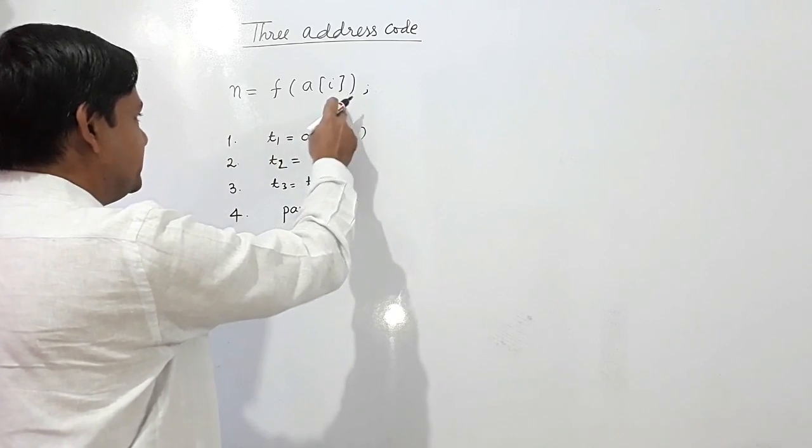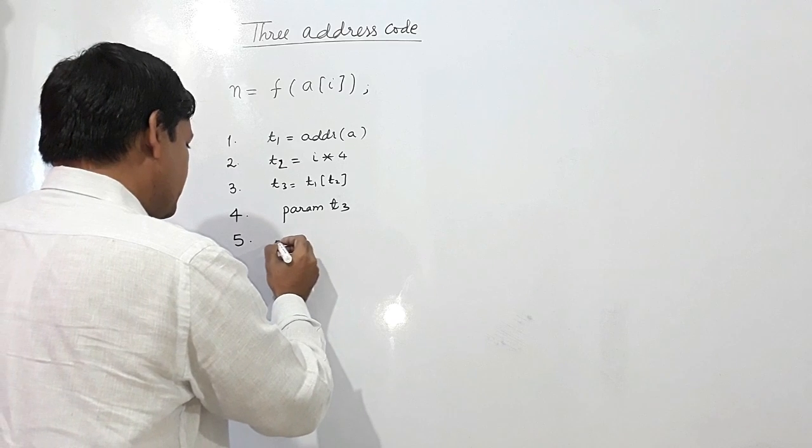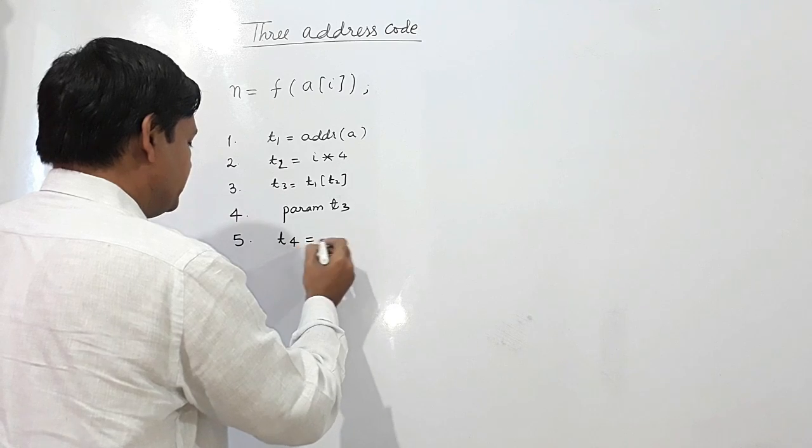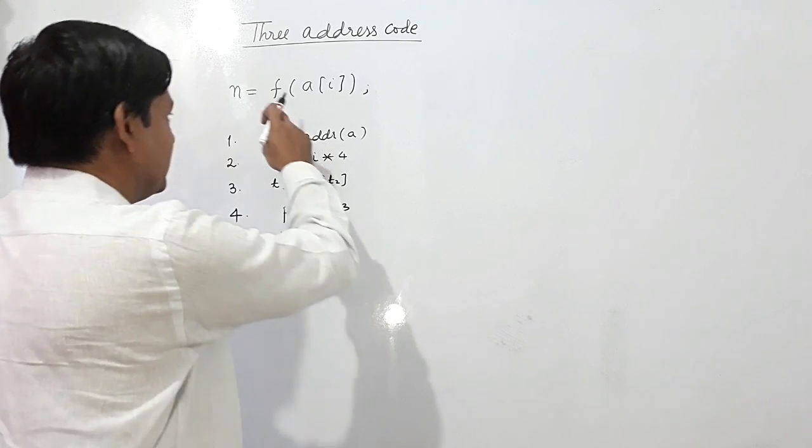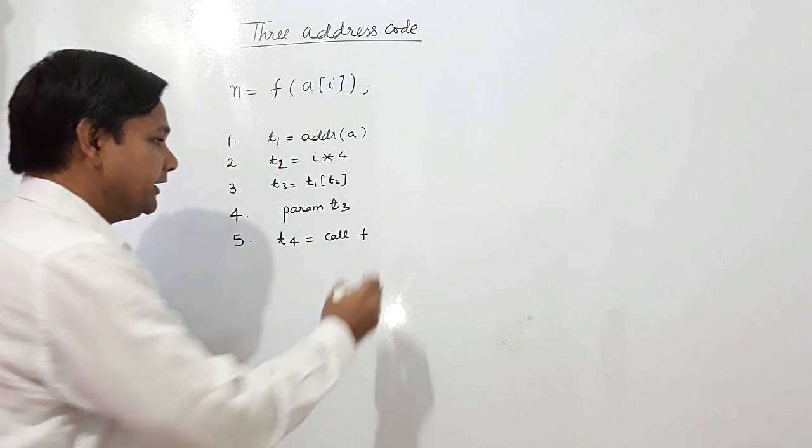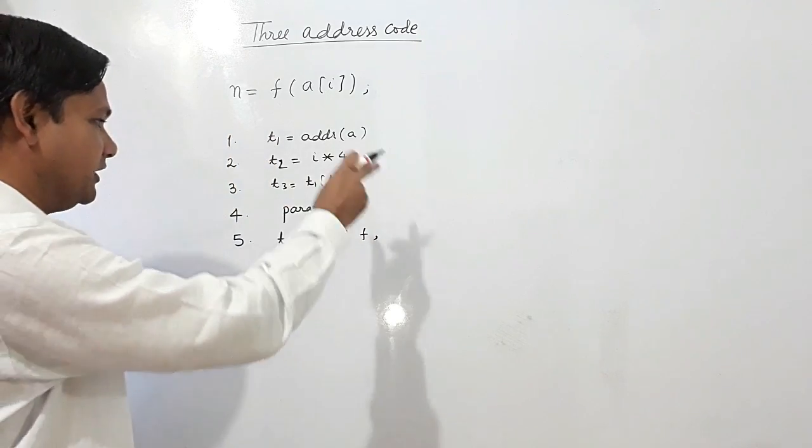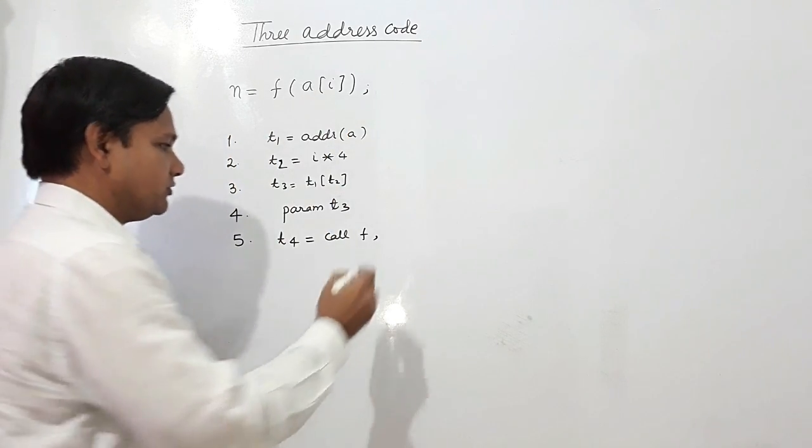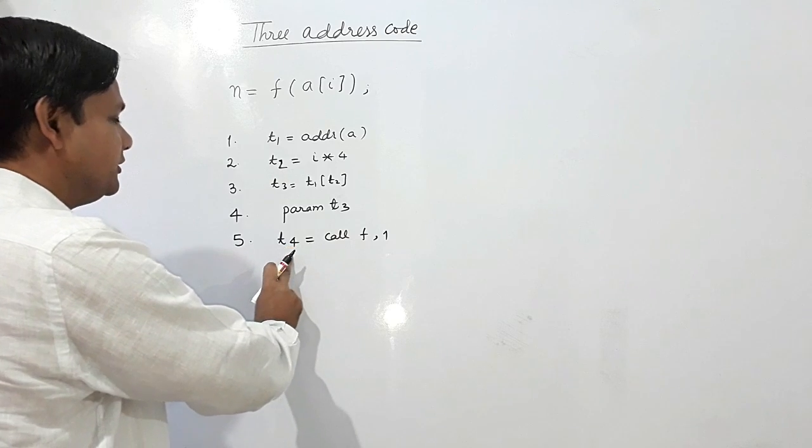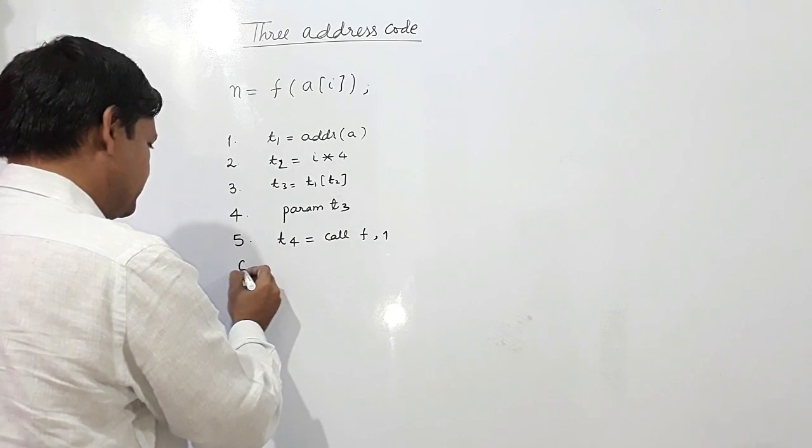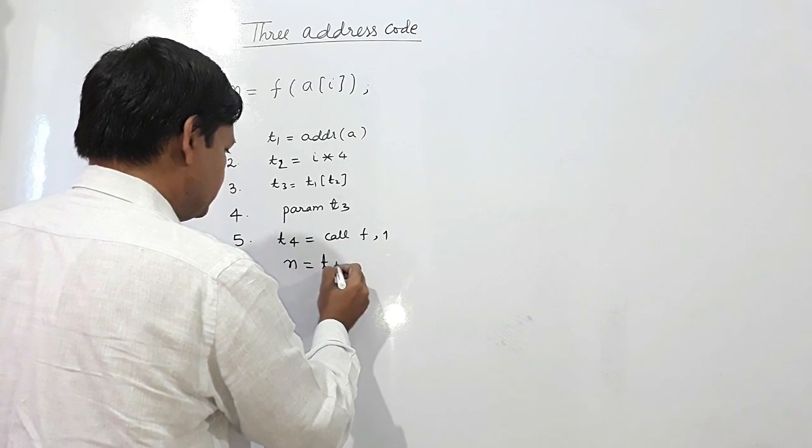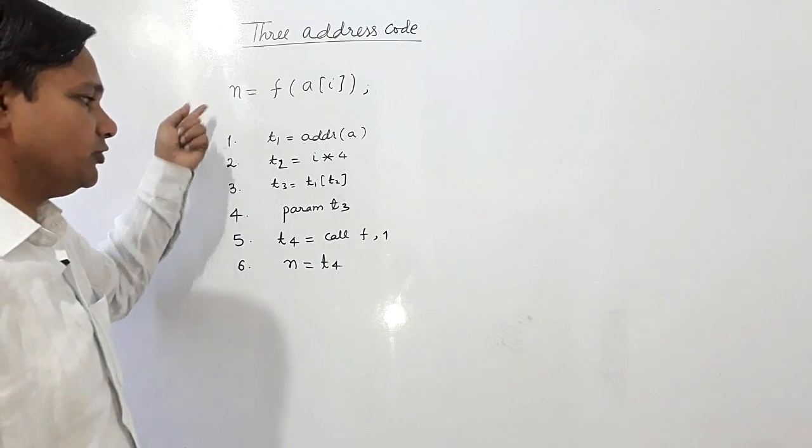Now function f is being called, so I am using one more variable t4 equals call f. What is the name of the function? f. And how many parameters are being passed? One parameter. And that value is being assigned into n, so at number six, t4 will be assigned into n. So this is the three address code for this code segment.